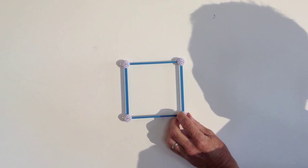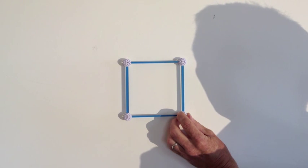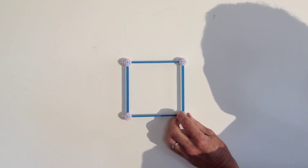And so, just as the zero dimensions gave us a point, the two points gave us the one-dimensional line, the four lines give us the two-dimensional square.